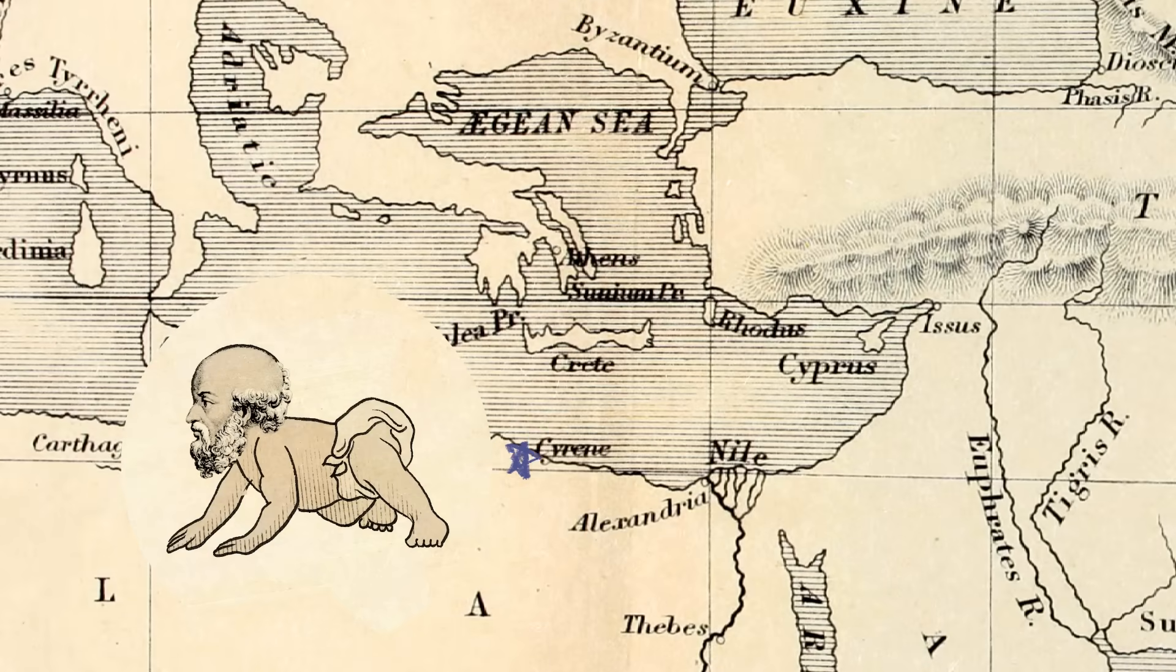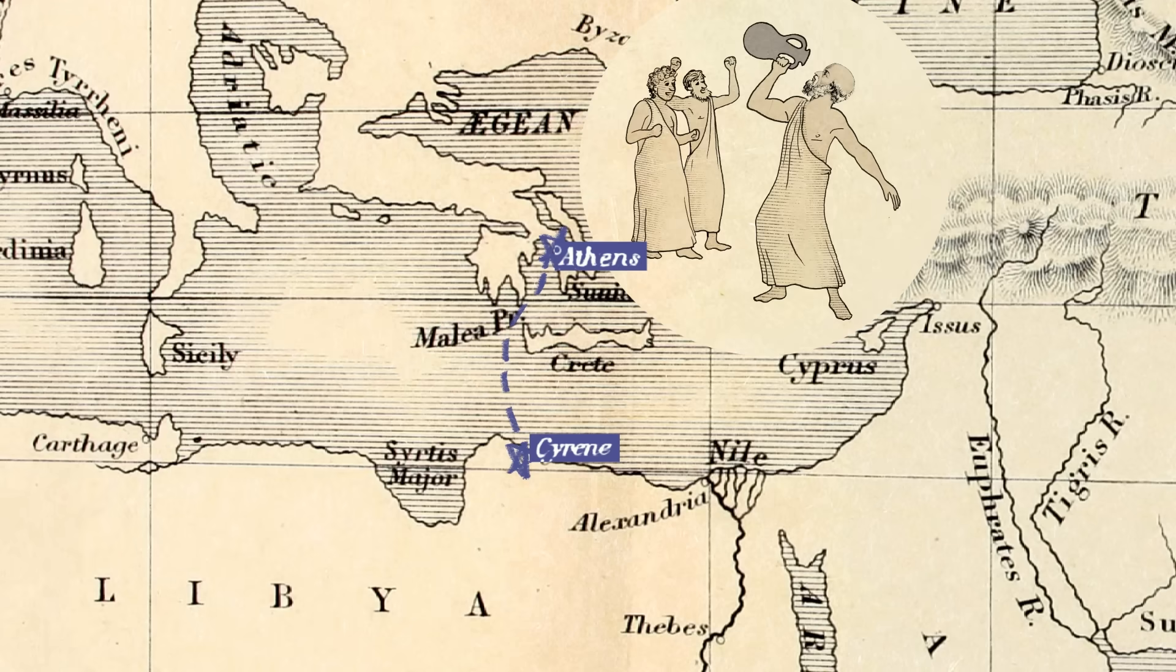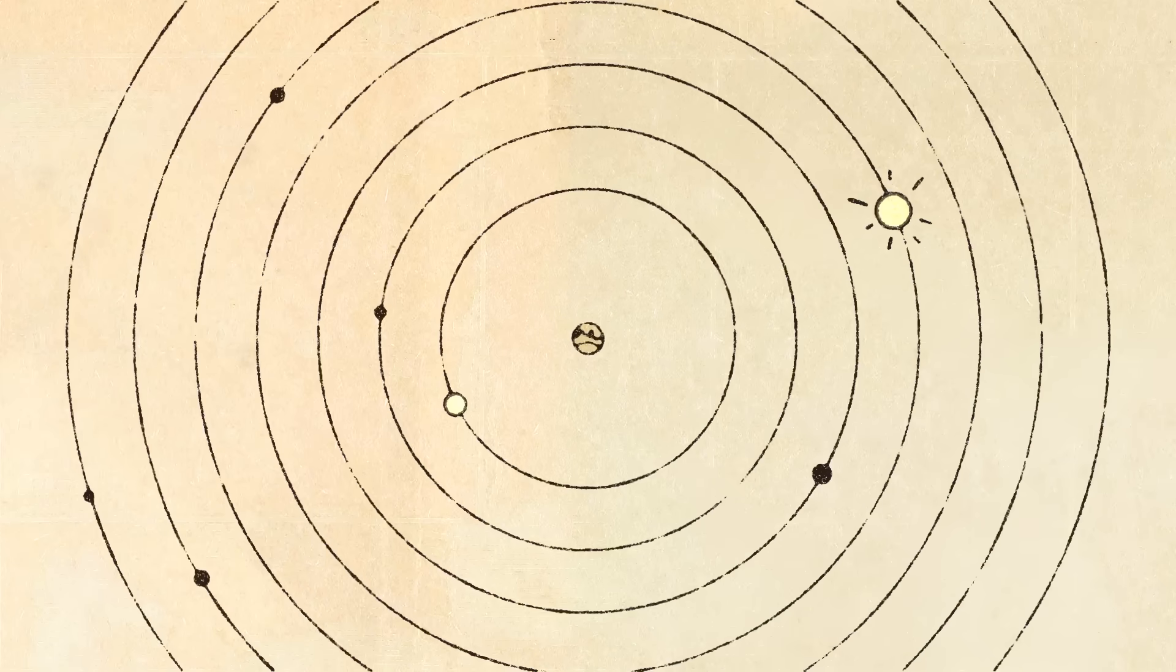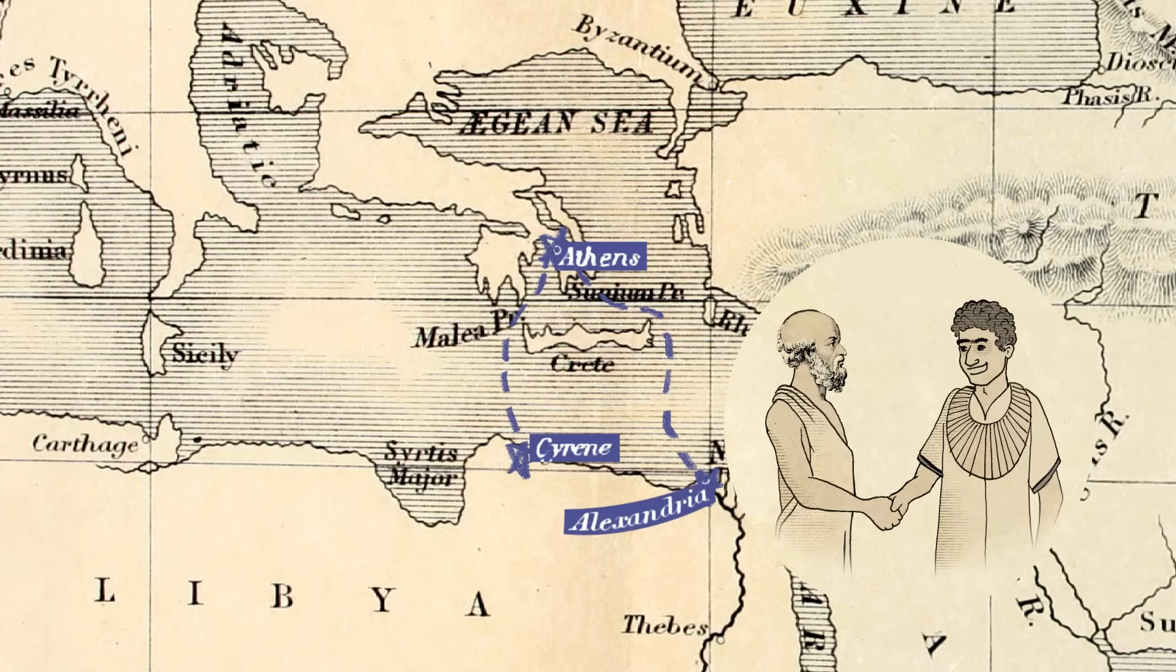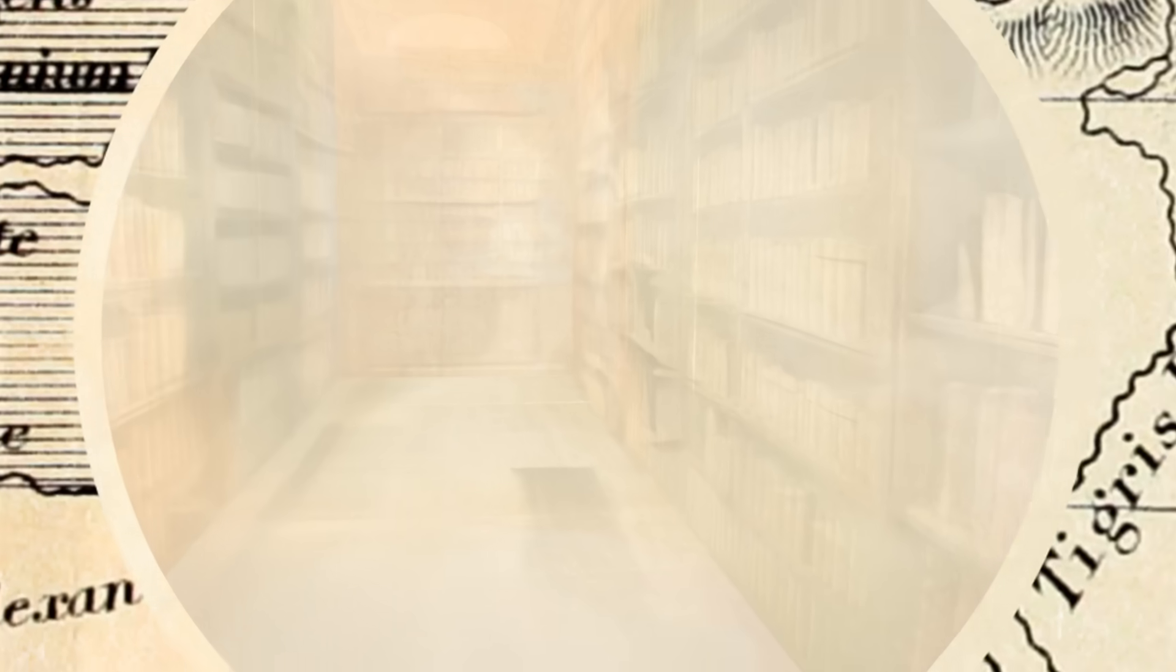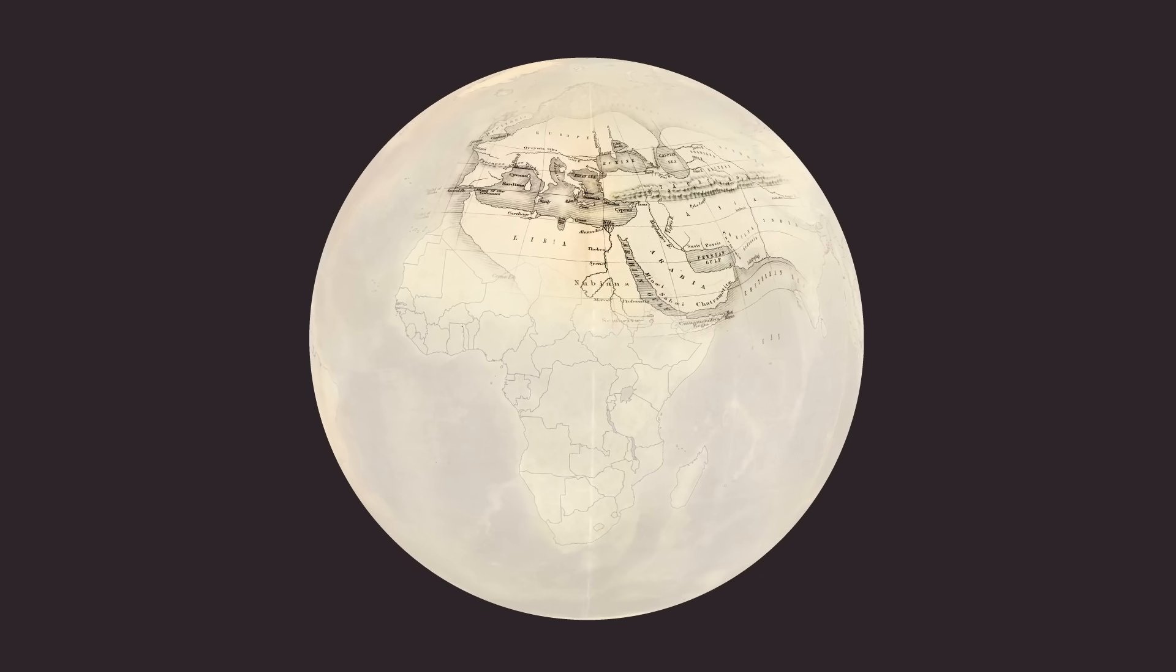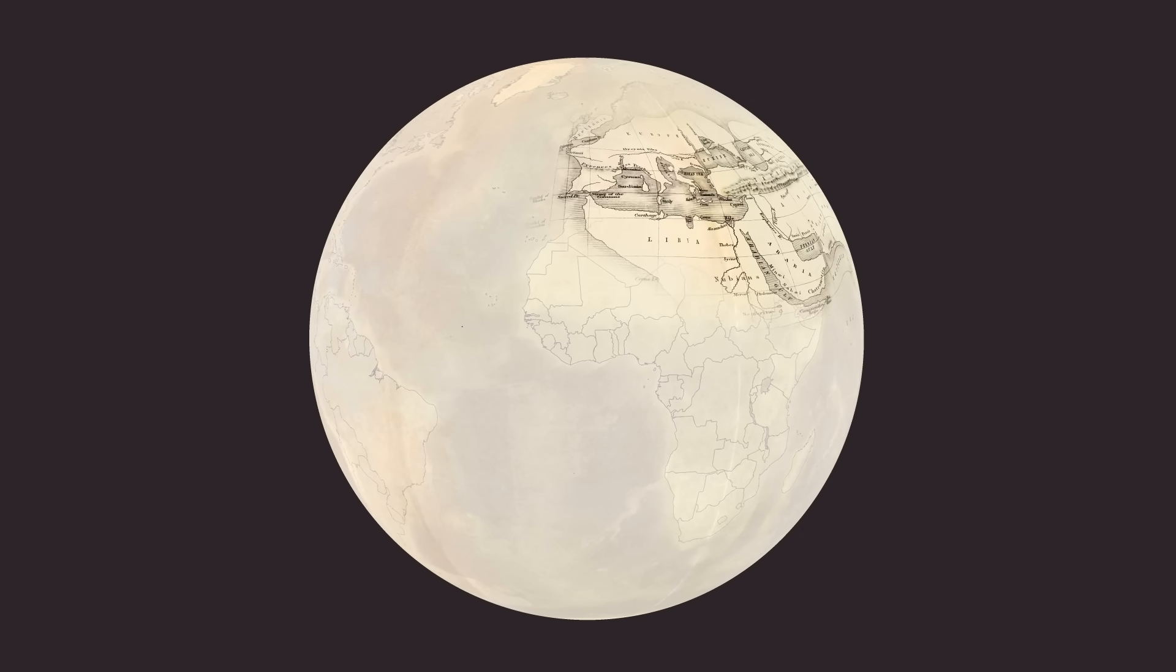Eratosthenes was born in this Greek colony in northern Africa. He studied abroad up in Athens, where he would have learned about the evolving model of the universe. The popular one at the time had the spherical Earth at the center, with the moon, sun, and planets orbiting really far away. Eratosthenes was hired on as the chief librarian at the famous Library of Alexandria, where he had access to thousands of texts that helped him piece together this slightly warped picture of the known world. He was only aware of about 4% of Earth's surface, but he was still able to calculate the size of the whole planet by making one simple observation.